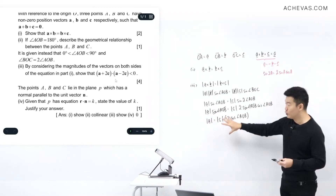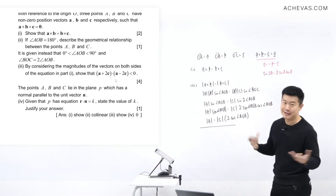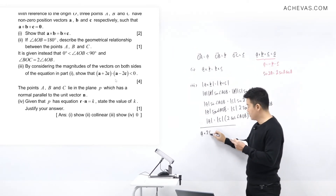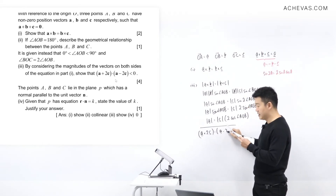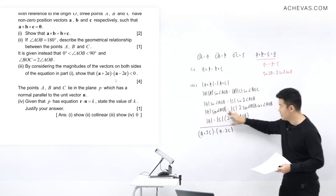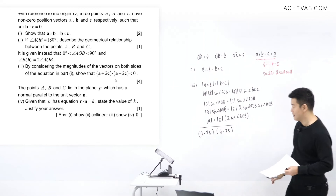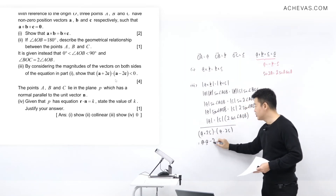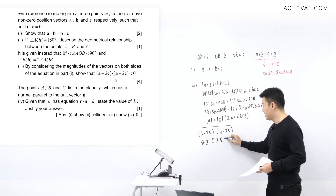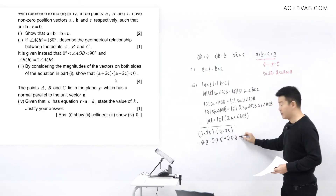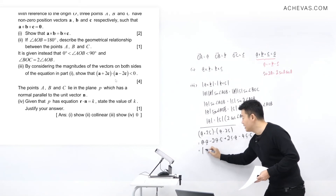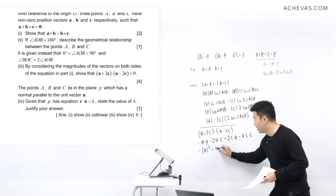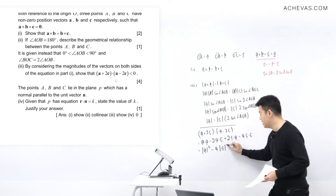Now let's start with the left hand side of the inequality and look at the expression (a + 2c)·(a - 2c). Expanding this, we have a·a minus 2(a·c) plus 2(c·a) minus 4(c·c). Since a·c equals c·a, those two middle terms cancel, leaving |a|² minus 4|c|².